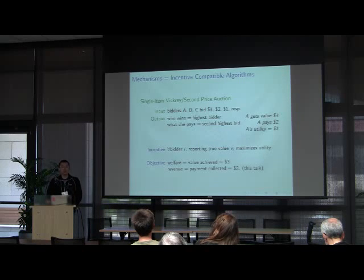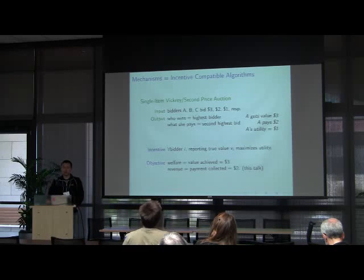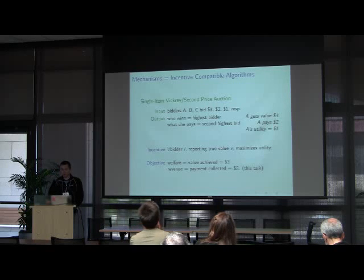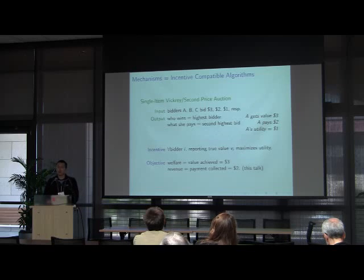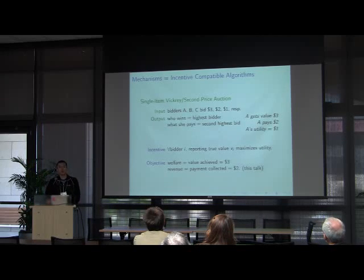Welfare and revenue are, in general, different objectives. For example, the Vickrey auction is optimal for welfare, because $3 is the maximum you can get, but it's not optimal for revenue. You can get slightly better revenue with a posted price auction that offers $2.50 to bidders one by one. In general, revenue is a more challenging goal to study, and it's going to be the focus of this talk.